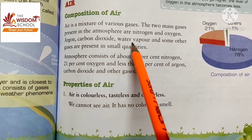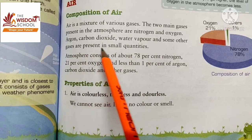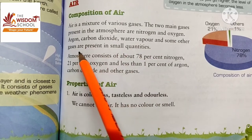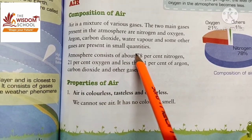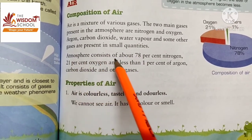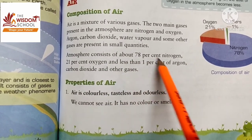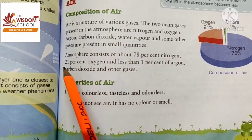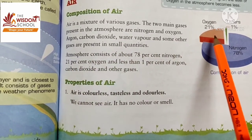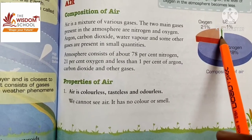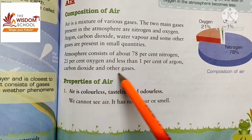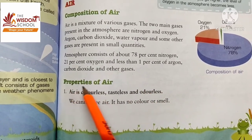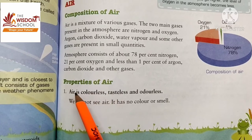Argon, carbon dioxide, water vapor, and some other gases are present in small quantities. The atmosphere consists of about 78% nitrogen, 21% oxygen, and the remaining 1% consists of all other gases.